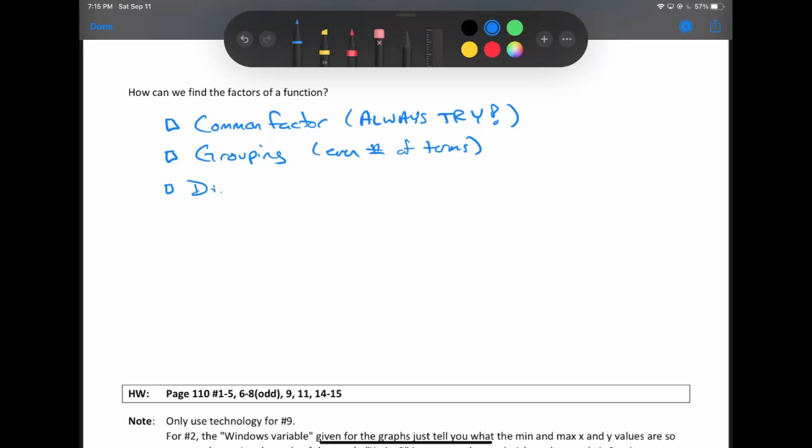Okay, now we've got difference of squares. Difference of squares. I can spell it, I swear it. Okay, that works, but obviously only if you've got two terms and they both happen to be perfect squares. So not overly useful in all situations.